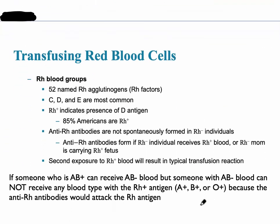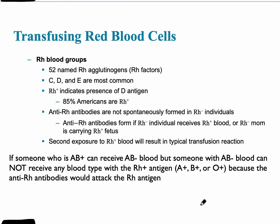The RH blood groups explain the positive or negative designation. When someone is A positive, B positive, or O positive, that means they have the RH antigen present. A negative, B negative, AB negative, or O negative means they do not have it. About 85% of Americans are RH positive.